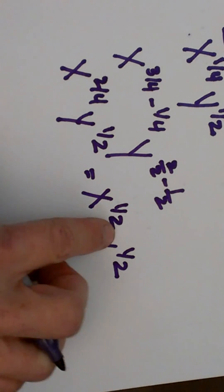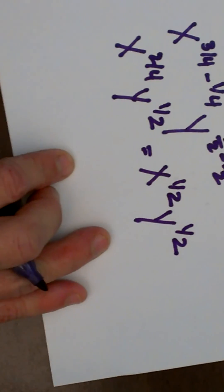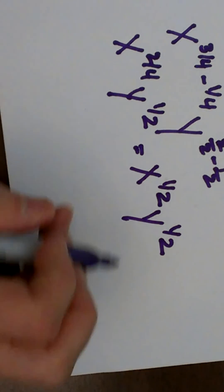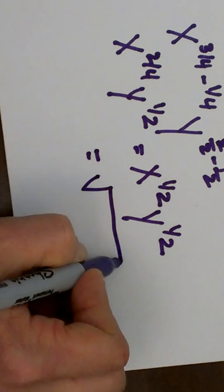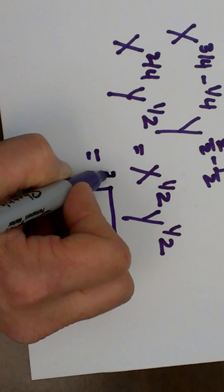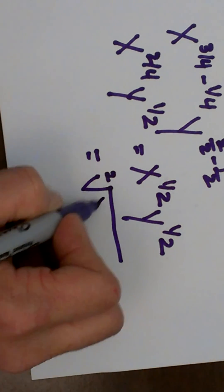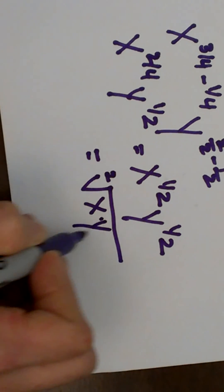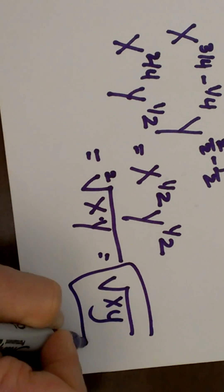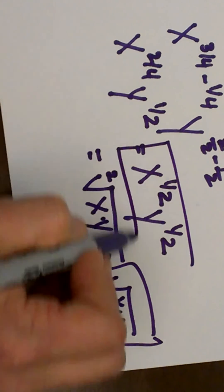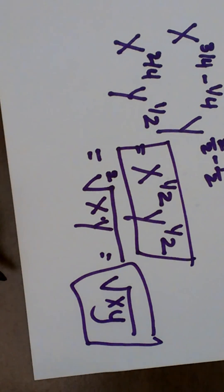Or since these have the same denominator, you could actually very easily write it with a radical. If you have to switch it to radical form, that is just the square root, we do not write it but there is a little 2 there for a square root, the square root of xy. And that is our final answer, or if you want to leave it as a rational exponent or fractional exponent, you can leave it like that.